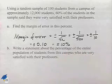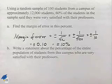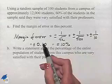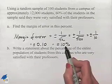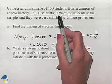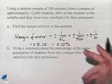Now we want to write a statement about the percentage of the entire population of students from this campus who are very satisfied with their professors. This margin of error is giving us a 95% confidence. Notice that we can go plus or minus 10% away from the results of the survey. That is, the results of the survey told us we had 60%.